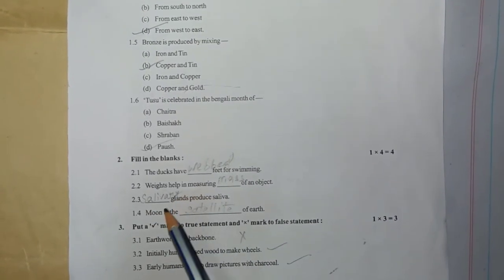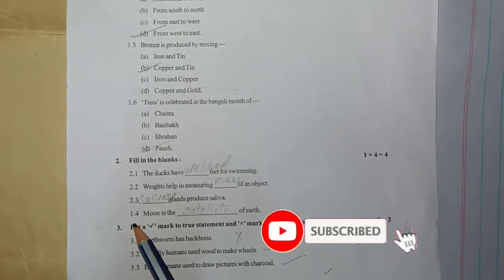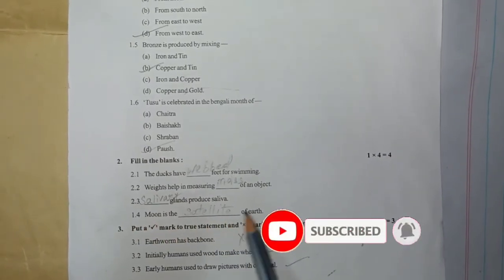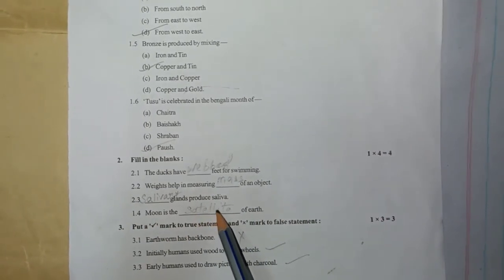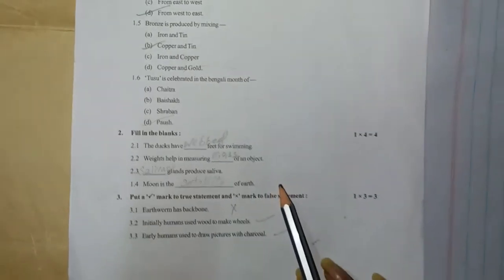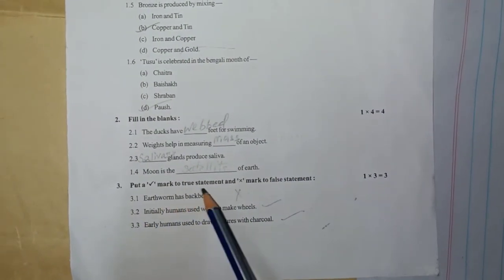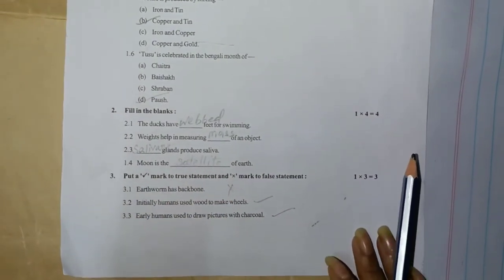2.3: Salivary glands produce saliva. S-A-L-I-V-A-R-Y, salivary. 2.4: Moon is the satellite of the Earth. S-A-T-E-L-L-I-T-E. 3.3: Put a right mark to a true statement and wrong mark to a false statement.